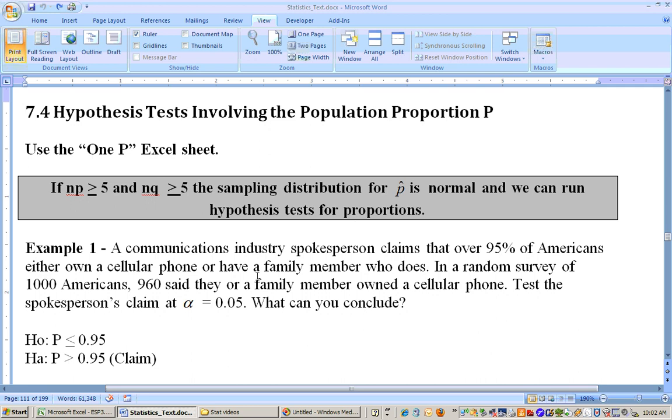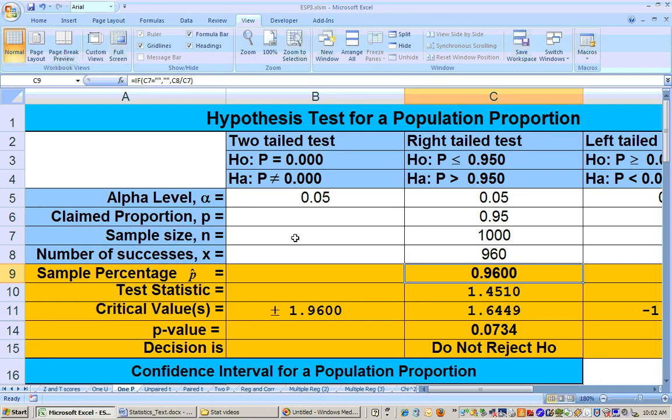Some problems from this section will just ask, can you run this problem or can't you? Is it approximately normal or not? And if it wasn't approximately normal, it would say here sample size too small. So for example,